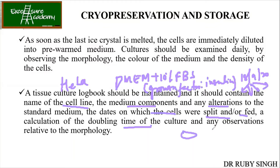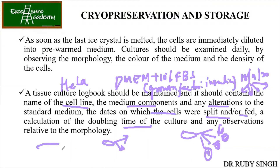If you have a small plate, I always advise going from one small plate to two only. If you have a bigger dish — this is called P30 — and if it is P60, then it should go into four. Once you go into the lab, you will understand what P30 and P60 are. This is how you should mention your splitting ratios.